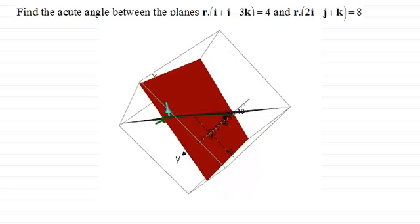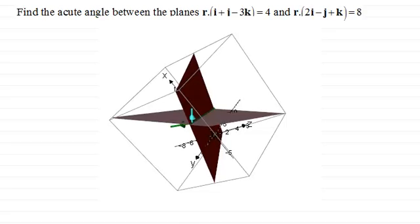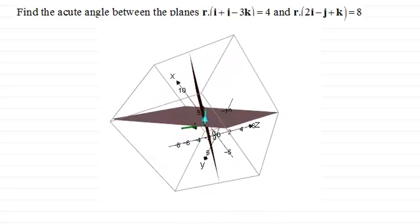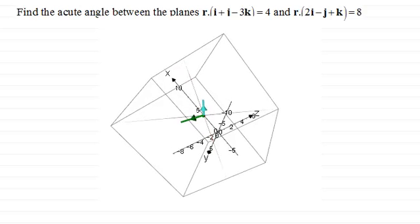And to do this we look at the vectors which are perpendicular to each of the two planes. And it's the angle between these two normal vectors which is exactly the same as the angle between the two planes.